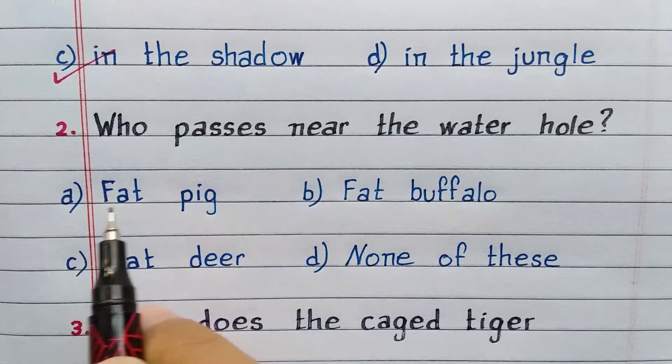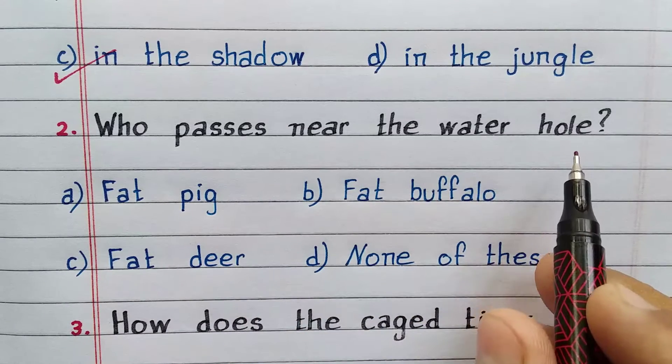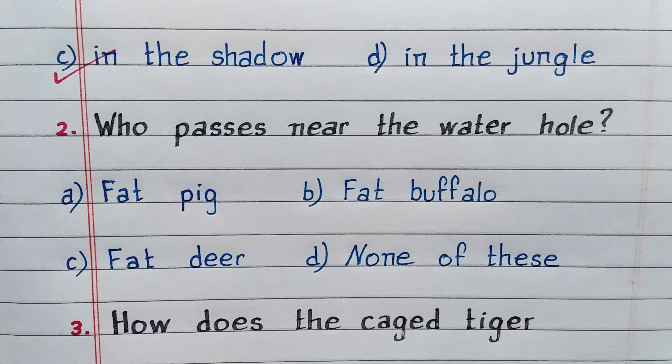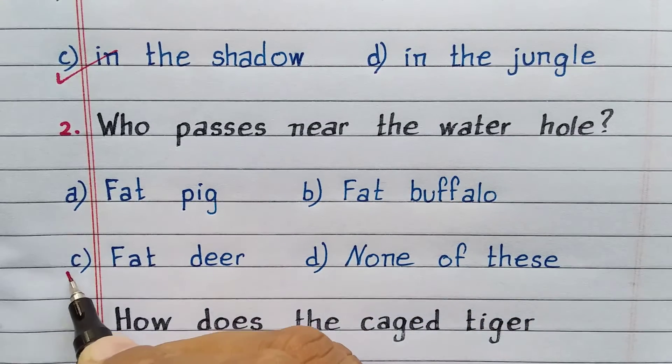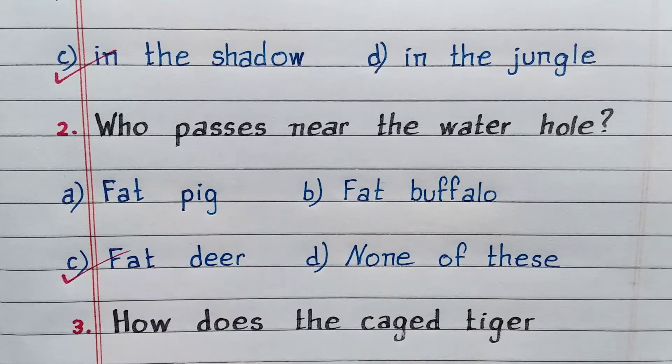Who passes near the waterhole? Option C. Fat deer.